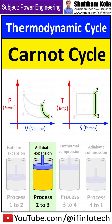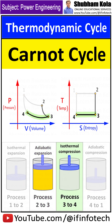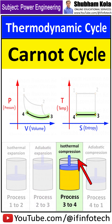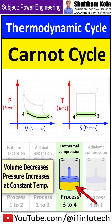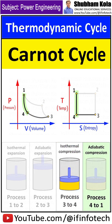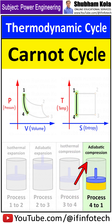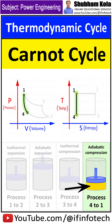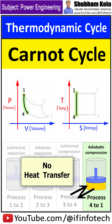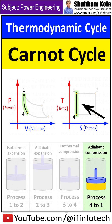The temperature lowers from Th to Tl. Process 3 to 4 is the reversible isothermal compression process, where compression means volume decreases and pressure increases at constant temperature. The next process, 4 to 1, is the reversible adiabatic compression process. Since it is an adiabatic process, the system is thermally insulated and there is no heat transfer between the surrounding and the system. During this process, the temperature again rises back.